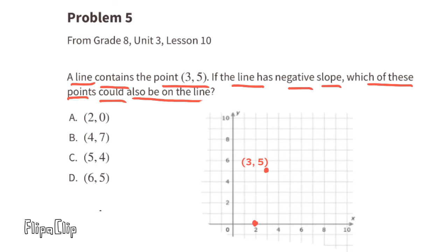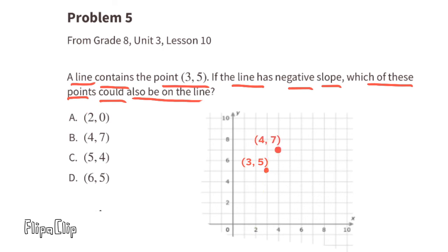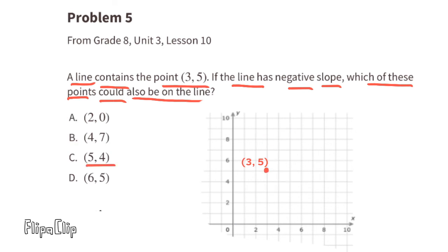Here's the point (2, 0) on a line with point (3, 5). You can see that that's a positive slope — the rise increases as you run to the right. Since it doesn't have a negative slope, this point can't be on the same line as (3, 5). For point B, (4, 7), it's also a positive slope, so (4, 7) can't be on the same line as (3, 5) if the line is supposed to have a negative slope.